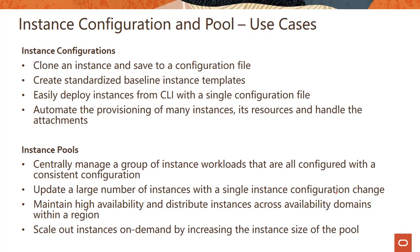So you clone an instance, create a template saved as a configuration, and then create standardized baseline instances from that template. You can easily deploy them using CLI, etc. The whole idea is automation of the provisioning process. If you have similar instances to spin up, you don't want to copy the same line of code or repeat console steps. Instance configuration lets you templatize provisioning and spin up multiple instances using that configuration.